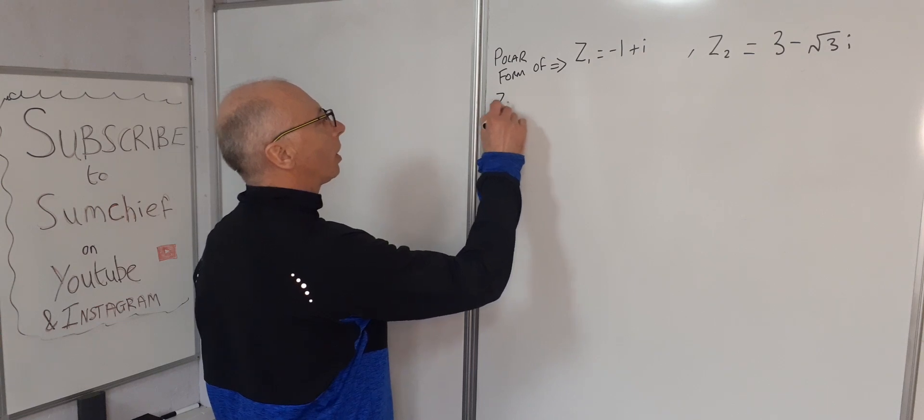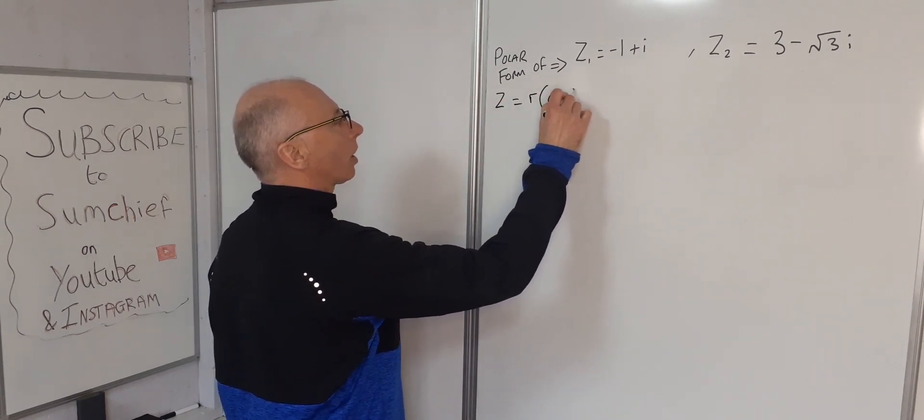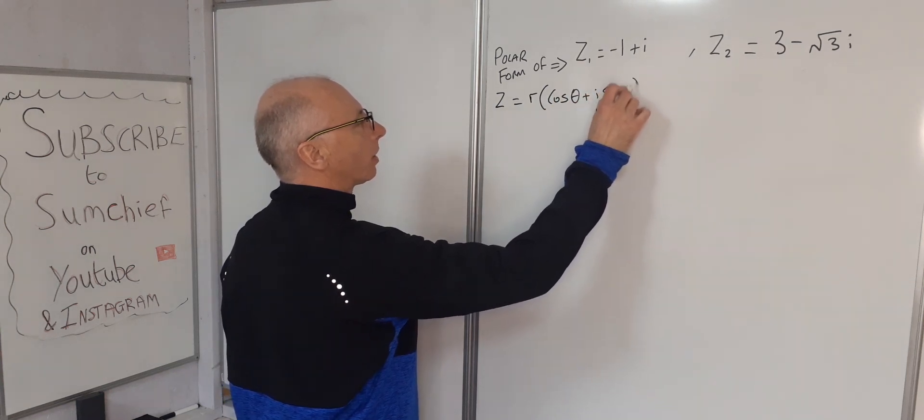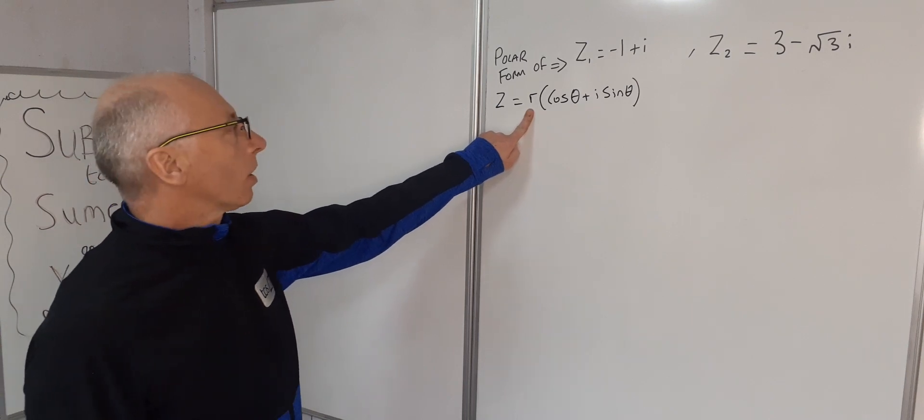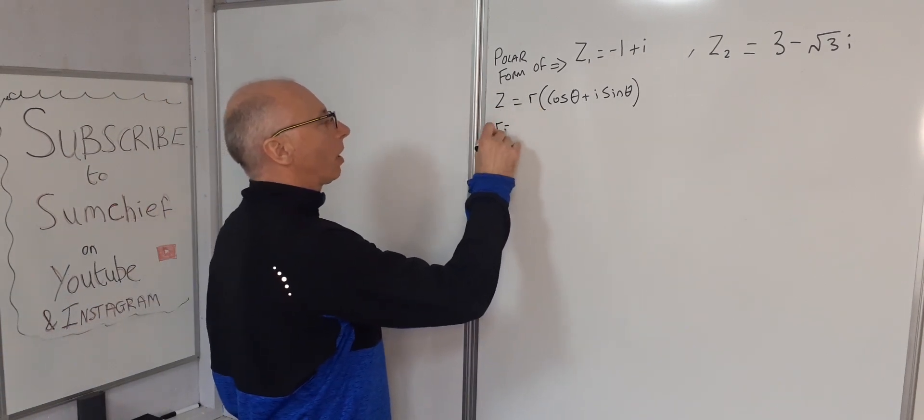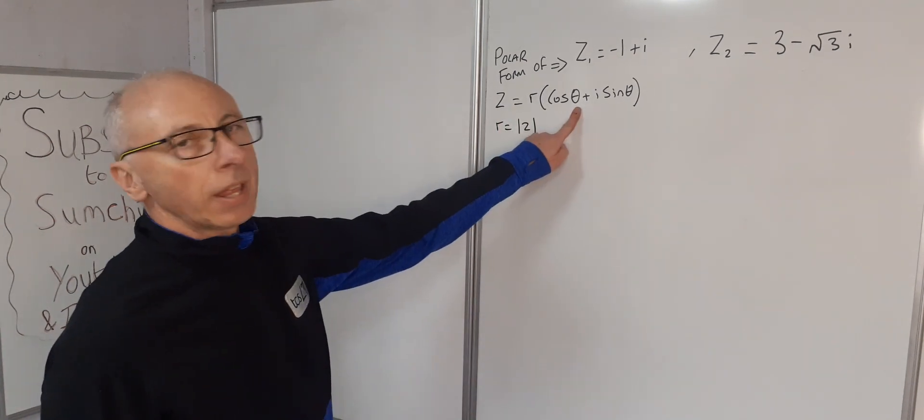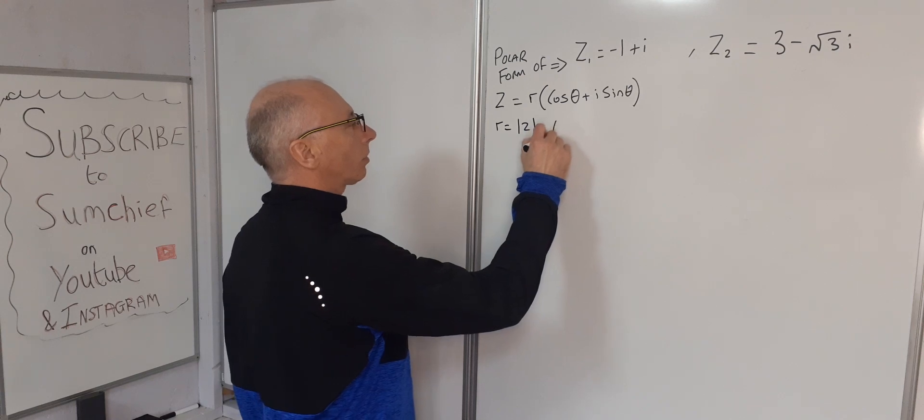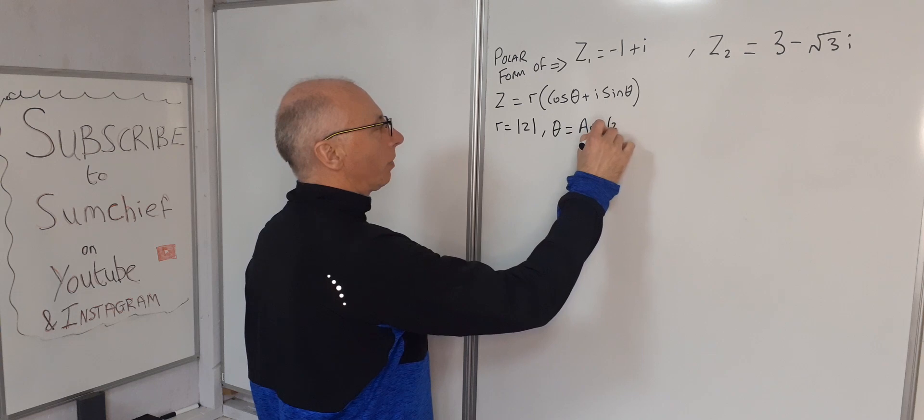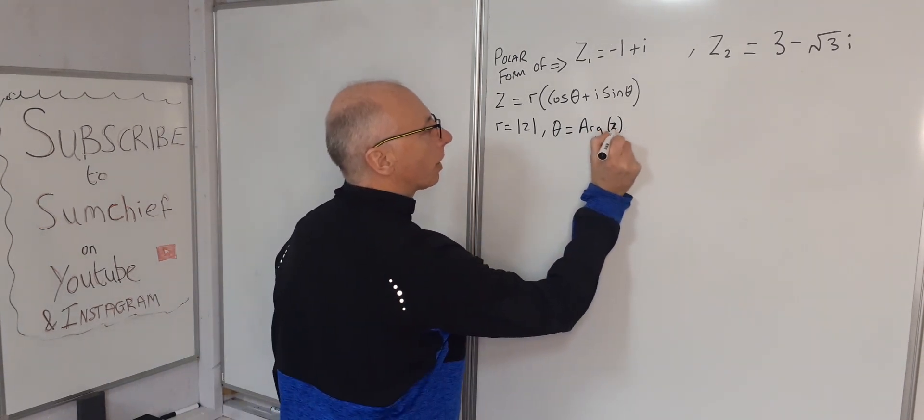First, let's see what polar form is for a complex number. In polar form, a complex number is written as r(cos θ + i sin θ), where r is the modulus, so r equals modulus of z, and θ equals the argument of z.